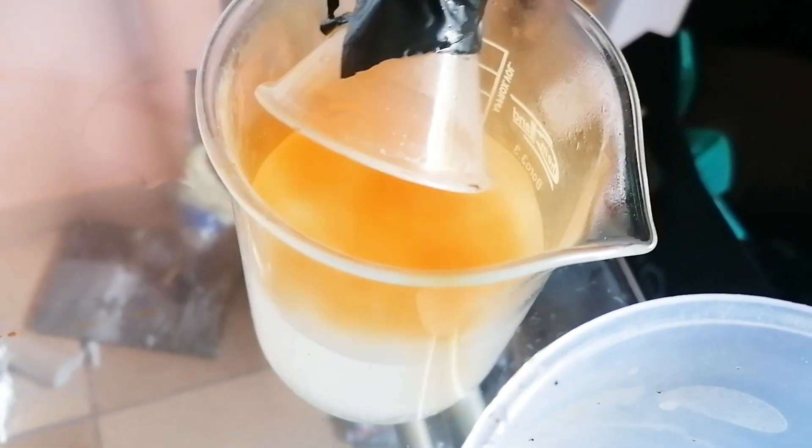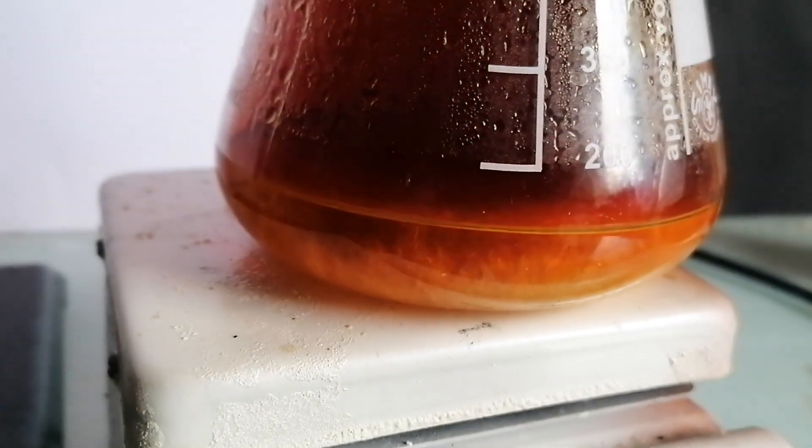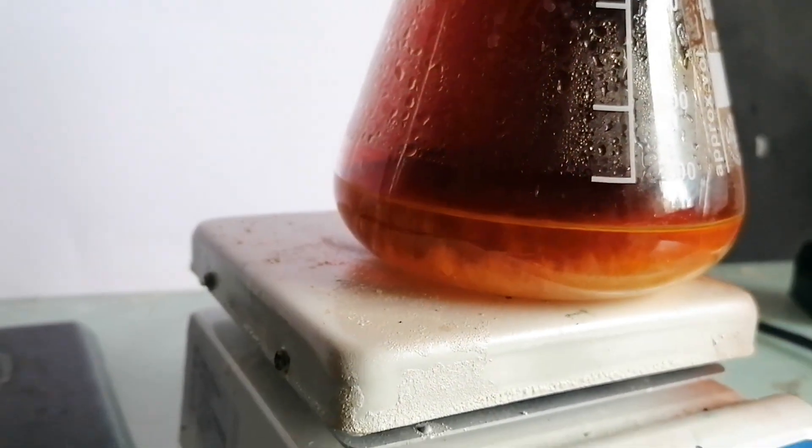Eventually, so much nitrogen dioxide got produced that it overcame the reverse funnel trap, and I had to reroute the tube out of the window. As the reaction was near the end, crystals of silver nitrate begin to form.